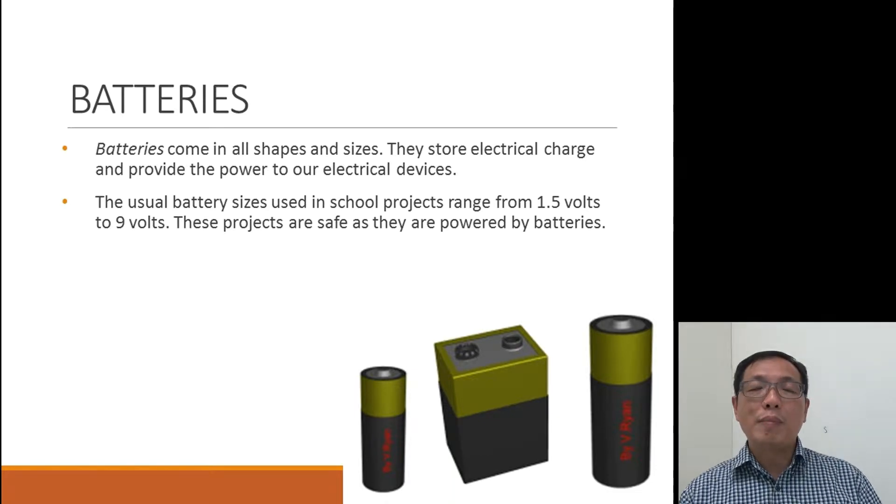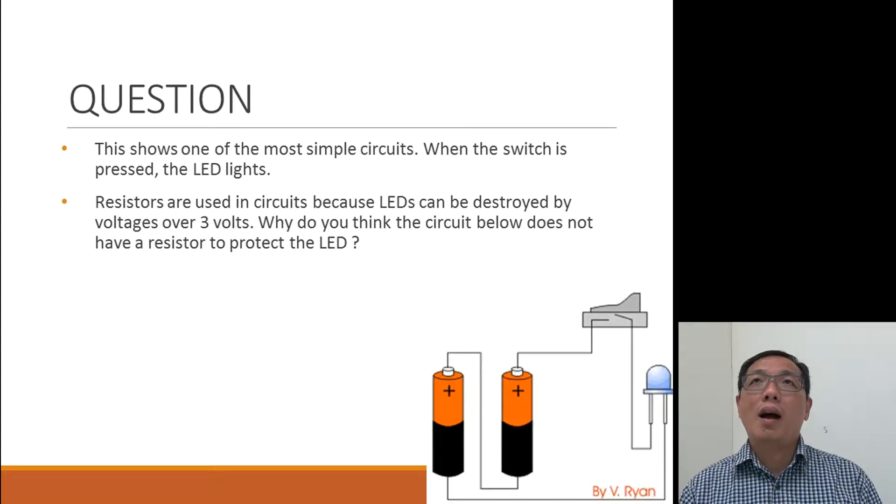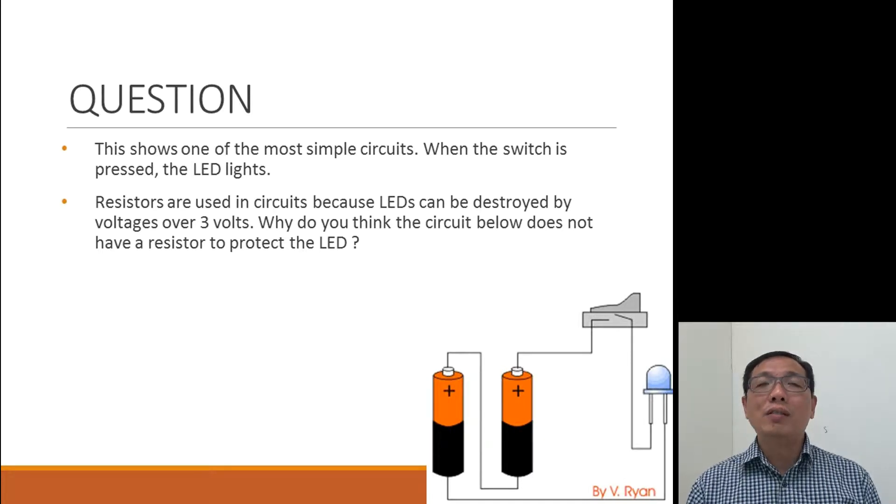The usual battery sizes that we use in the workshops are 1.5 volts or the 9 volts. The one that you see on your left is the triple A battery and the one on your right is the double A battery and the center one is your 9 volt battery. You look at this simple circuit. When the switch is switched on, what happened to the LED? The LED turns on.